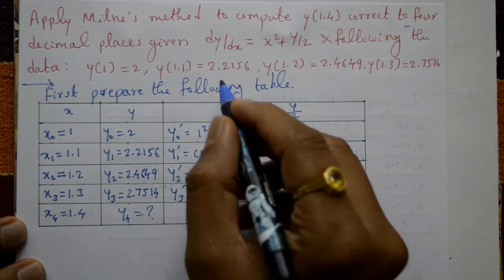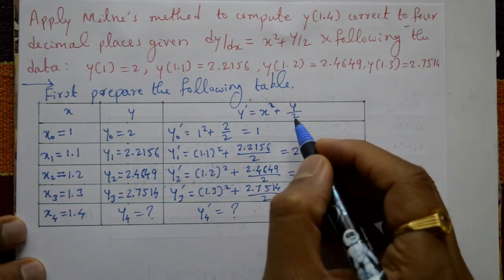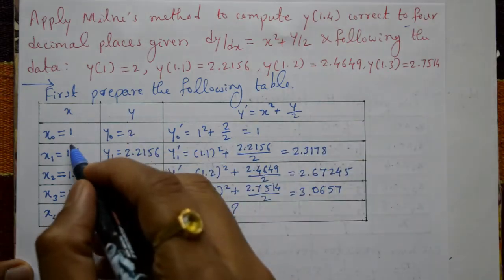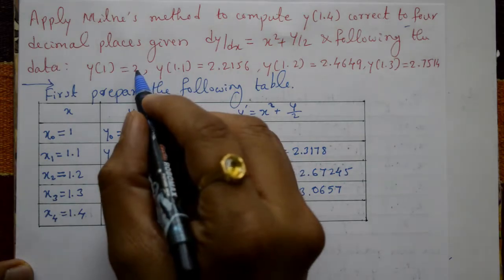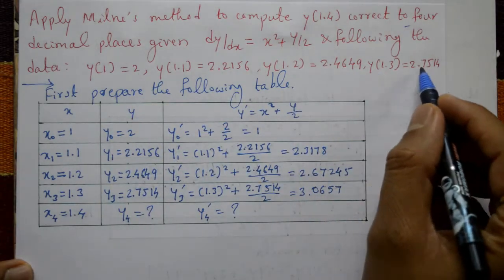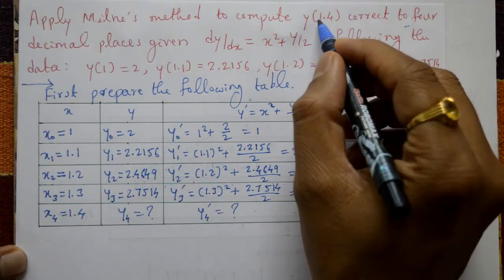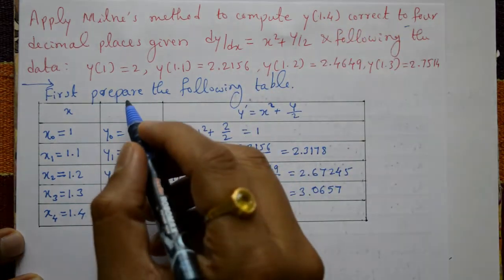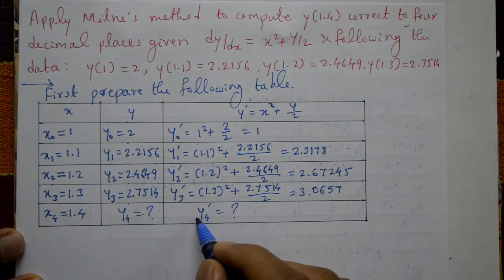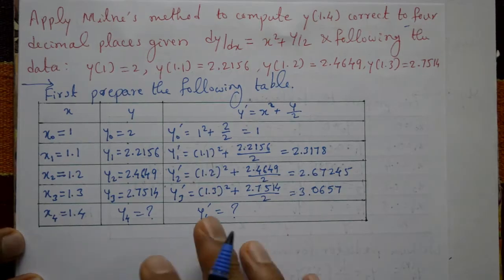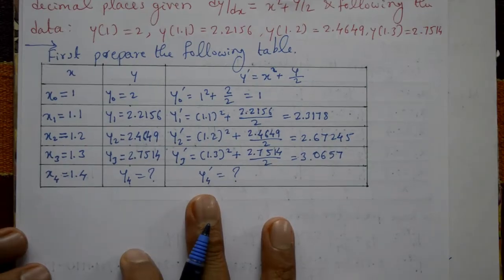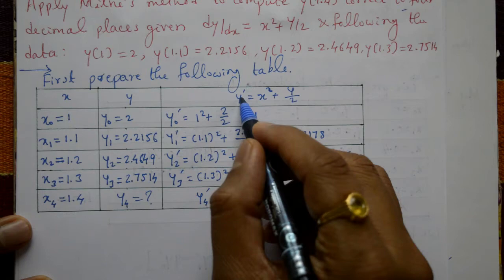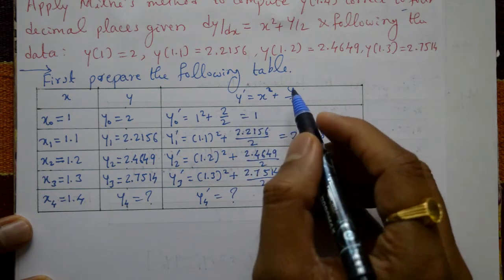Now we prepare the table using Milne's method with columns for x, y, and y' = x² + y/2. The x values are x0, x1, x2, x3 and the corresponding y values are y0, y1, y2, y3. We need to find y4 at x4 = 1.4 using Milne's method.